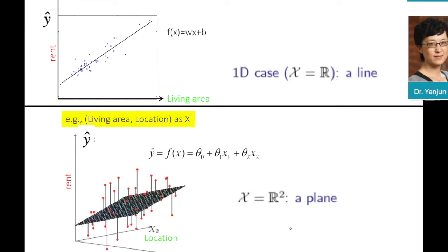Let's make it concrete with a common example: figuring out the relationship between rent and some variables. A sensible feature to represent a rented house might be the size of the living area. So x equals the living area, and a linear relationship means f(x) = wx + b, which corresponds to a line in x-y space.